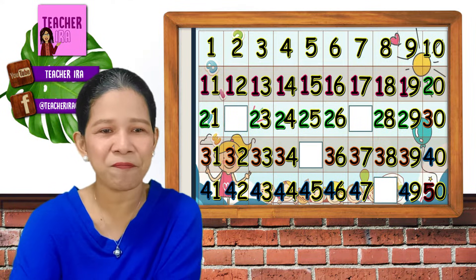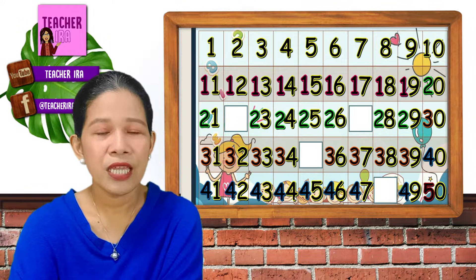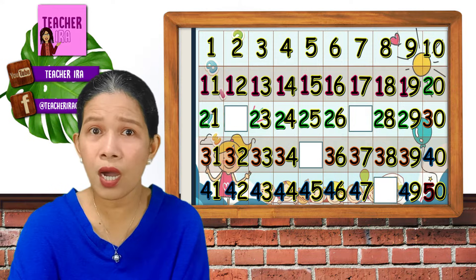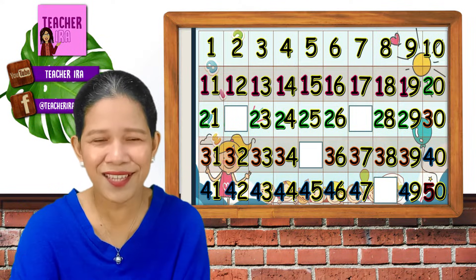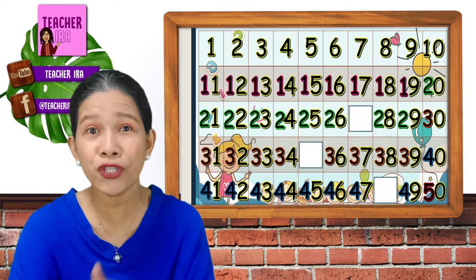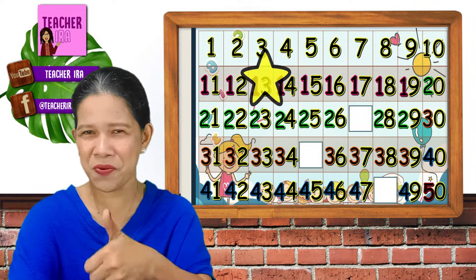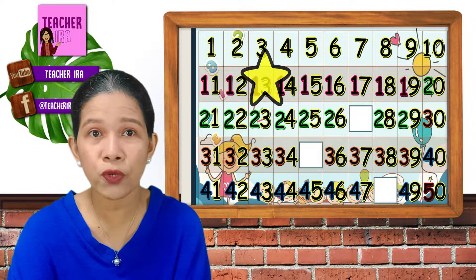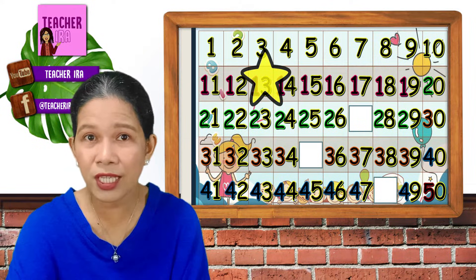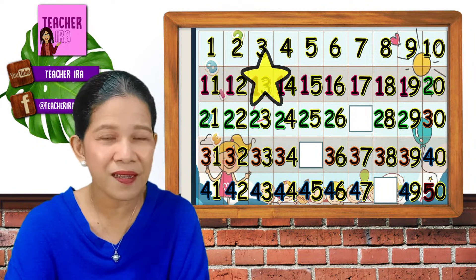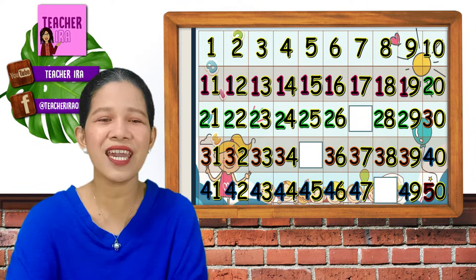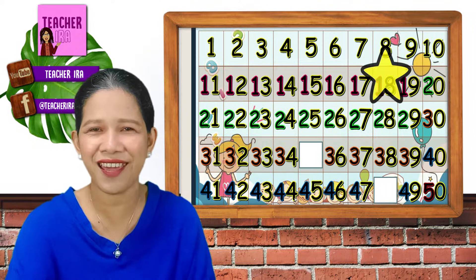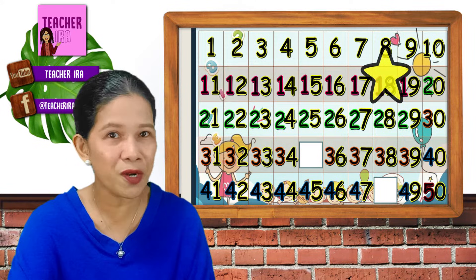Okay, how about on the next line? Line of 2 — in numbers 21 to 30, what could be this missing one? 2 and 1. And what do you think is the missing? Yes, correct. It's 22. Another star for you. Great job. If that's 22, let's continue counting: 22, 23, 24, 25, 26 — what could be the next one to 26? Yes, it's 27. Another star for that, kids. Wow, you are learning much.